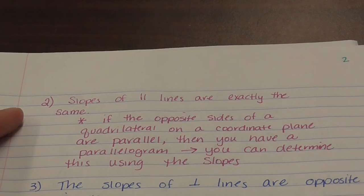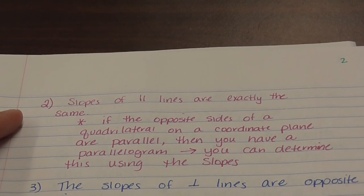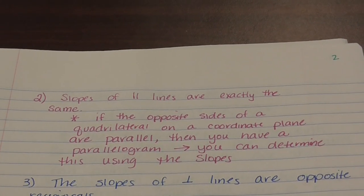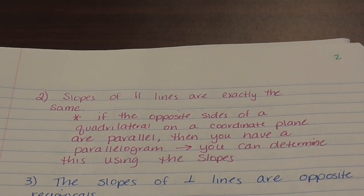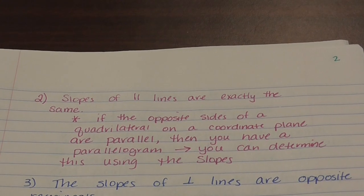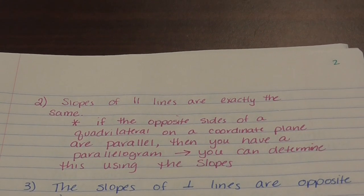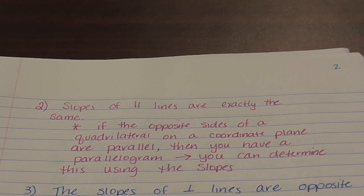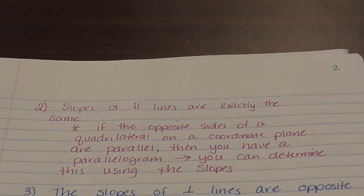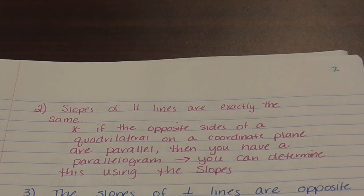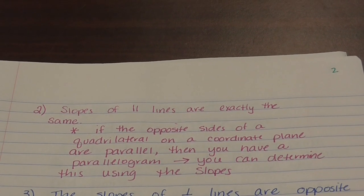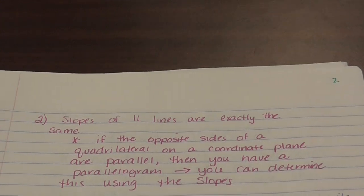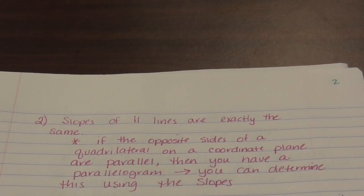Slopes of parallel lines are exactly the same. So if you end up with two slopes that are the same, those two lines are parallel. If the opposite sides of a quadrilateral on a coordinate plane both have parallel slopes, you can show that you have at least a parallelogram.